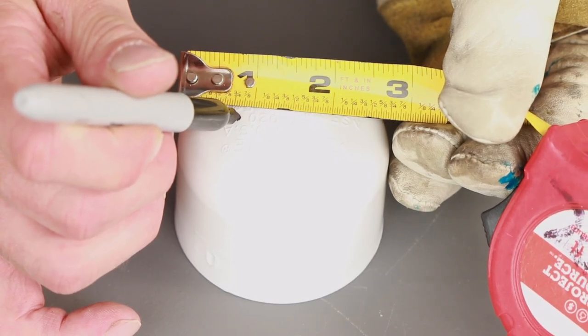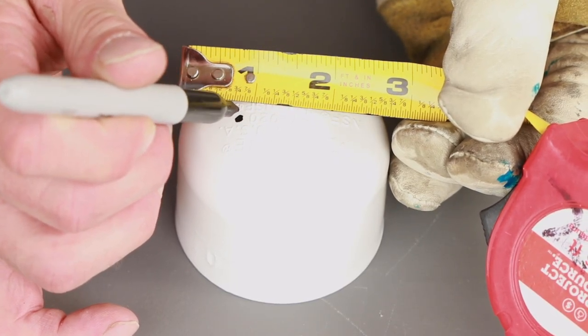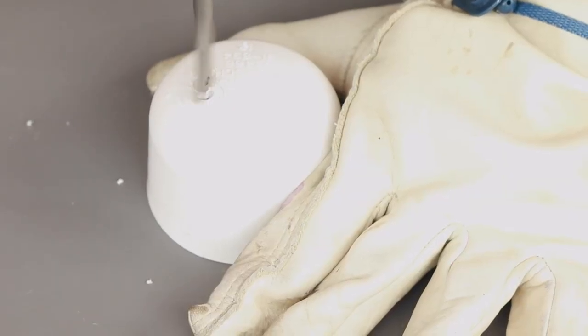Get the 2-inch pipe cap and drill a 1/2 inch hole, placing the drill bit 3/4 of an inch from one edge of the cap.